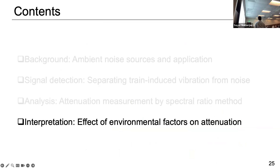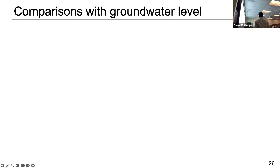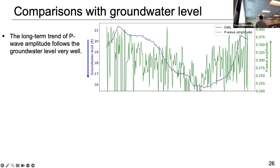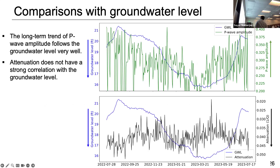Now, the Illinois Geological Survey was interested in monitoring subsurface changes. We tried to compare attenuation first with the groundwater level, since that's what people are most interested in — trying to see changes in dV/V and measure groundwater level. We compared the groundwater level with the P wave amplitude, and the long-term trend matches the P wave amplitude very well. But when we compared the attenuation with the groundwater level, there is hardly any correlation — actually there is anti-correlation in most places.